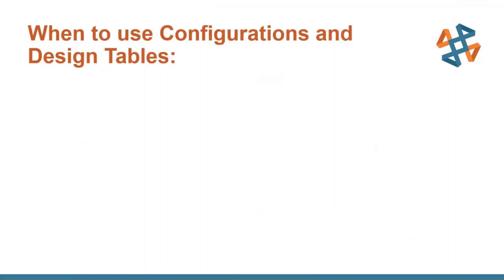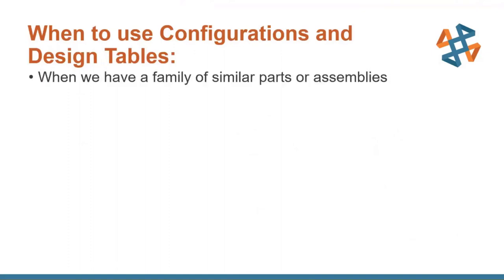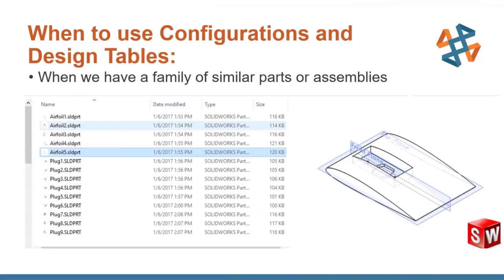The first question is when to use configurations and design tables. When we have a family of similar parts or assemblies, that is where we want to use a design table. Looking at the example screenshot, you can see 10 to 12 different parts with the same name. That airfoil could be condensed into one part file, that plug into one part file, controlled with parameters rather than having to change four or five parts when a design change comes in.